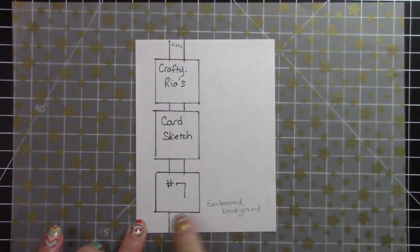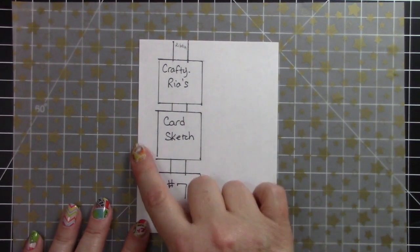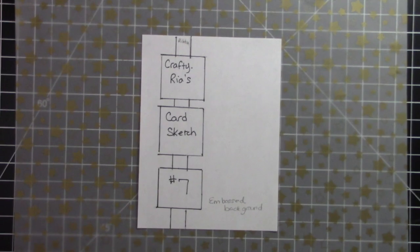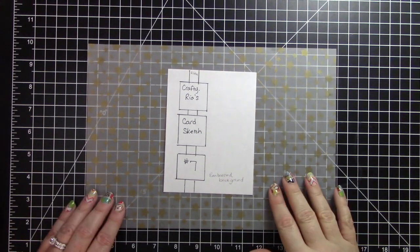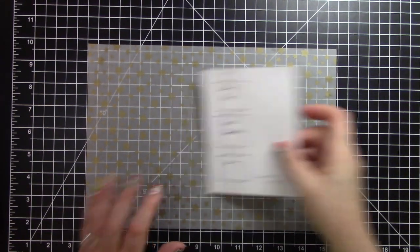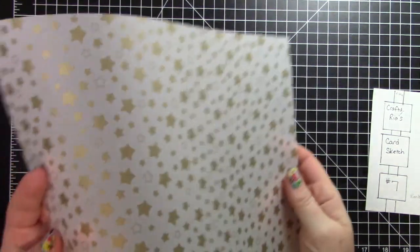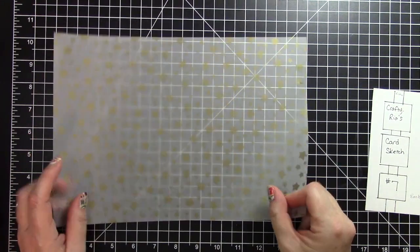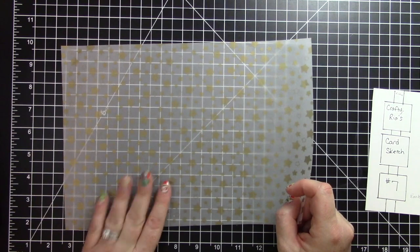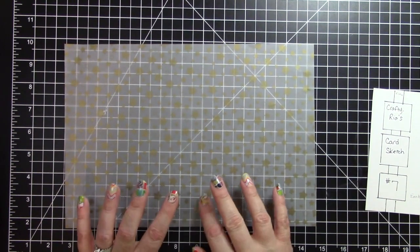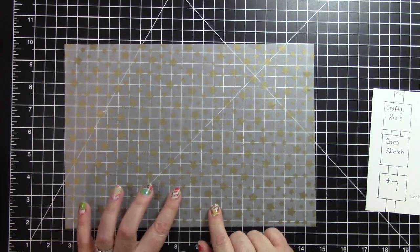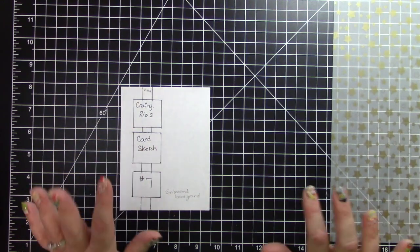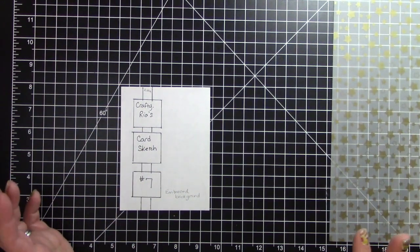This card sketch is based on a regular card of four and a quarter by five and a half. I'm going to zoom back out to see my full work surface. I'm also featuring vellum in this video today. We had some discussion in the Facebook group Create with Crafty Rhea about using vellum, and I promised a video on it. We're going to make two cards with the card sketch, one recycled Christmas card and one regular card.